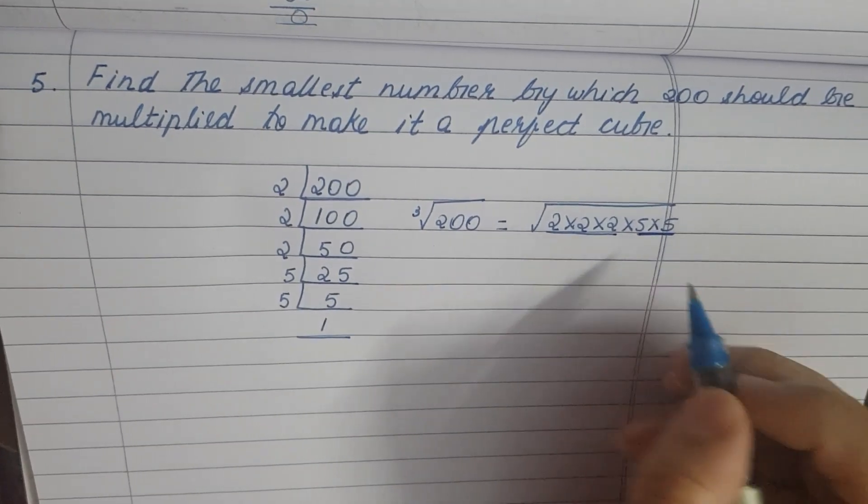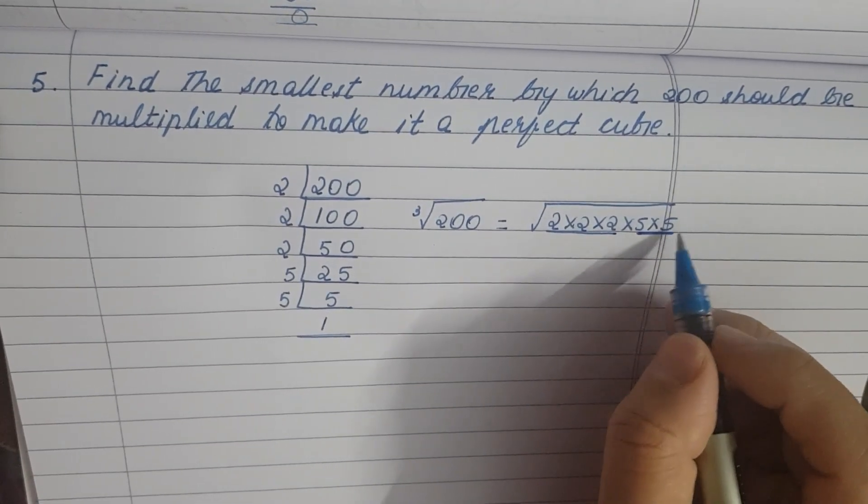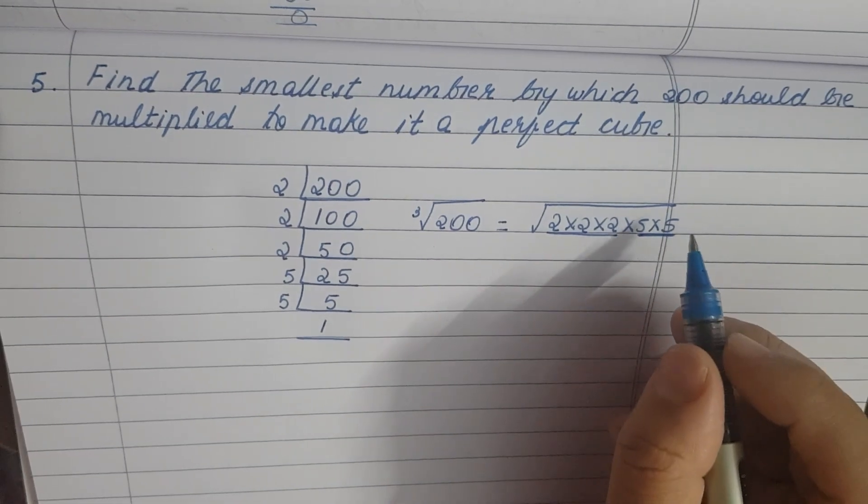If you look at this, it will be 2. The missing number is 5. If you look at this number,